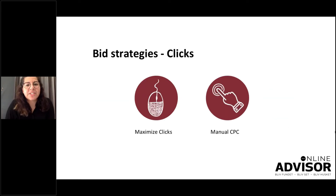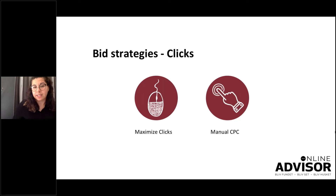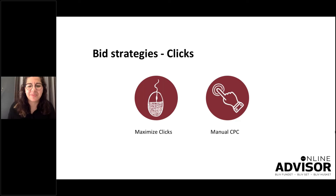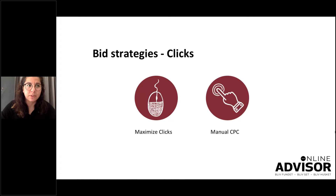For bid strategy types for clicks: Maximize Clicks is like Maximize Conversions but for clicks — you put a budget and it gets the clicks in. Manual CPC is where you have more control over your bids, for example for keywords, audiences, devices, and so on. Be aware that with manual CPC, Google almost always suggests you increase your budget. So be aware of what you have to increase and decrease within that bidding strategy type, because it's really important if you're using it.